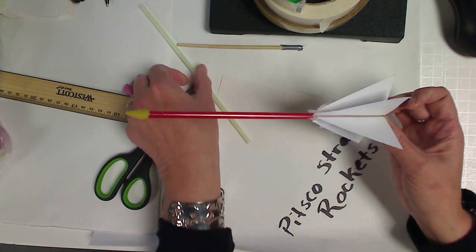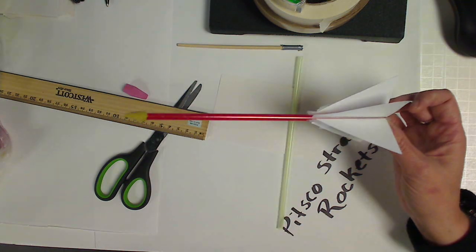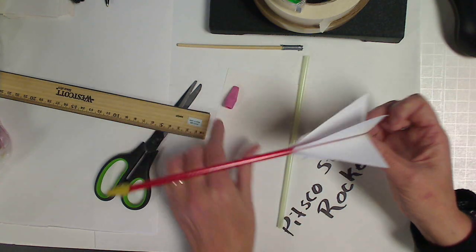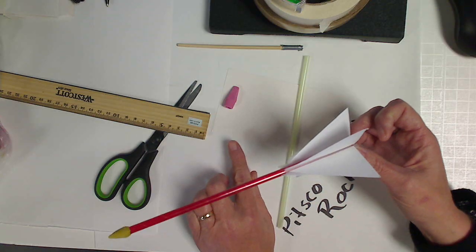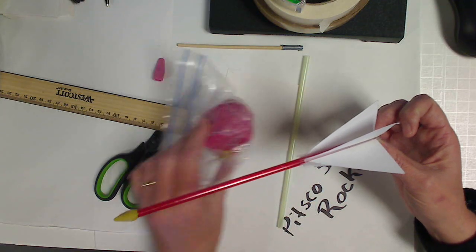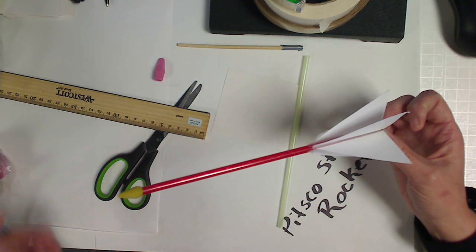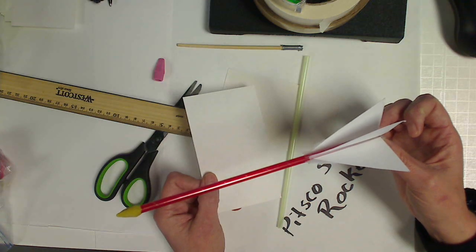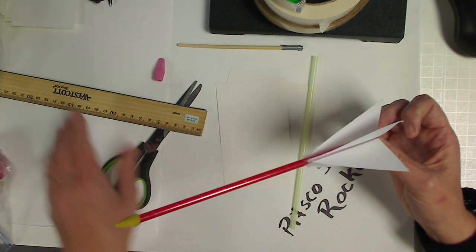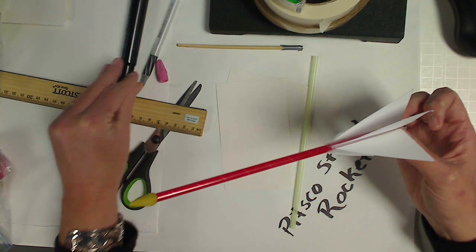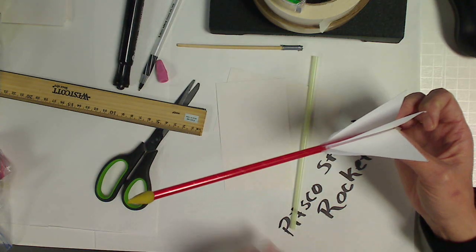So we will need our straw. We will either need something for the cone like the top of an eraser for a pencil or clay. We will need some type of heavy cardstock or index card or paper. We can use a ruler, a pen, pencil, or a magic marker and scissors.